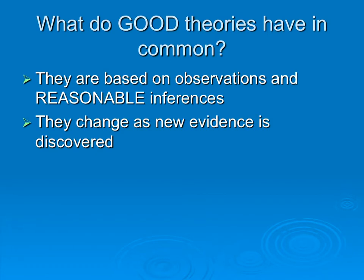Darwin laid out a theory of evolution by natural selection, and then when DNA was discovered, that became the mechanism for evolution to occur. So we didn't start from scratch — we incorporated new information into the theory. The same thing happens in chemistry.